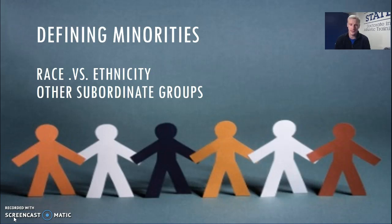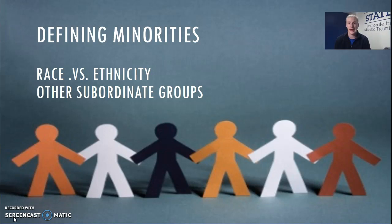Other subordinate groups include things like religion and gender, where religion would include Mormons, Catholics, and Muslims fitting into the minority group, and where women would fit into the minority group for gender. In addition, we have ethnic groups which are based more on culture, such as Puerto Ricans and Colombians. Someone can both be a racial and a cultural minority, such as a Black Hispanic.